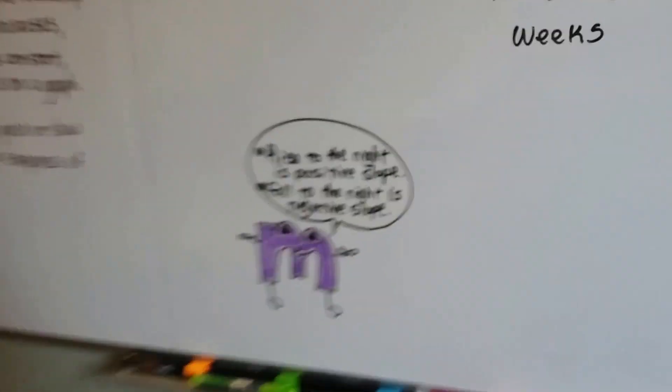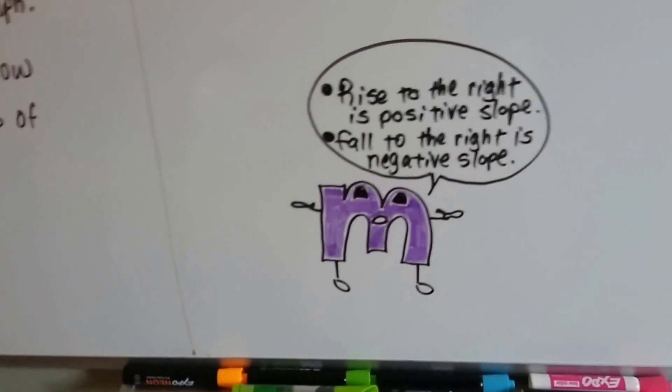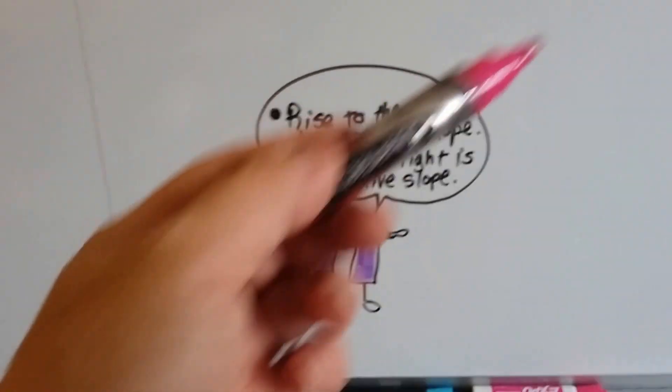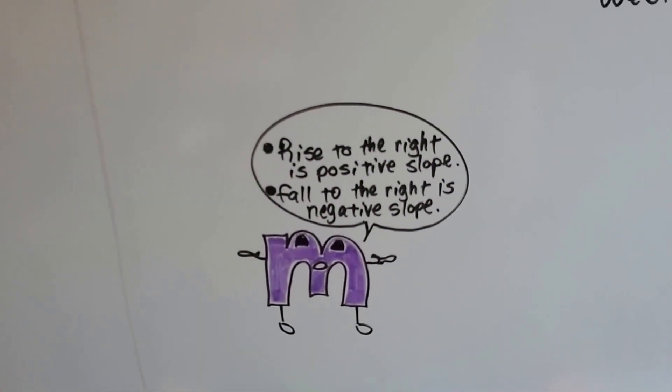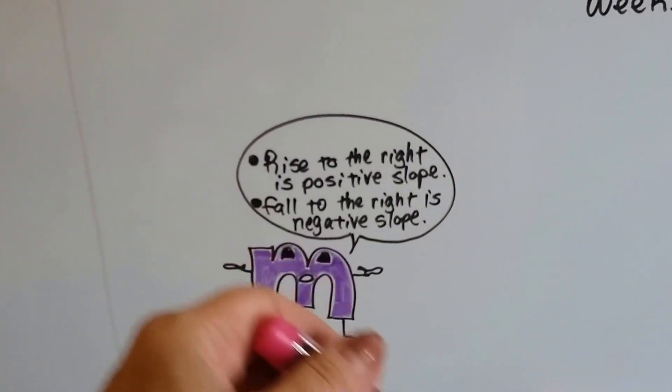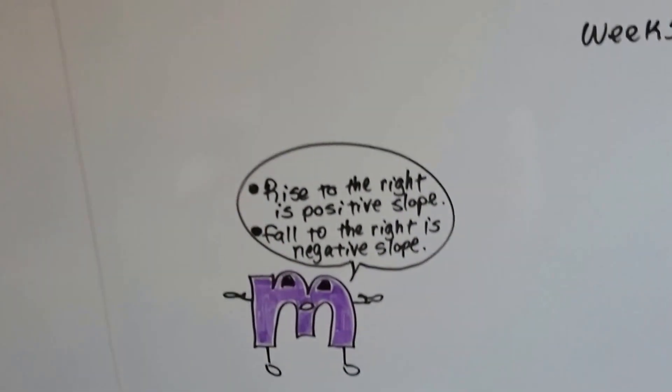So just remember that when the slope starts to rise to the right, it's a positive slope. When that line rises to the right like that, it's a positive slope. When it falls to the right like this, then it's a negative slope.